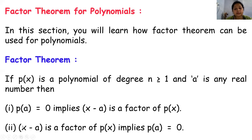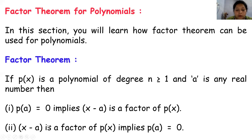यानि कि अगर x minus a, p(x) का factor है, यानि कि वो उसको exactly divisible कर रहा है, उस case में हमारा remainder 0 हो जाएगा. तो यही हम number form में पढ़ते थे और यहाँ polynomial form में इस चीज़ को explain कर रहे हैं.